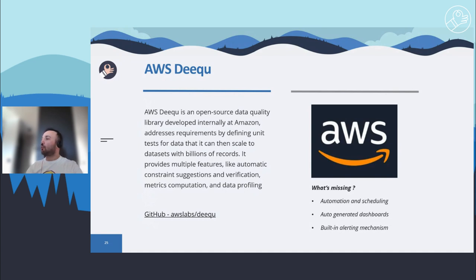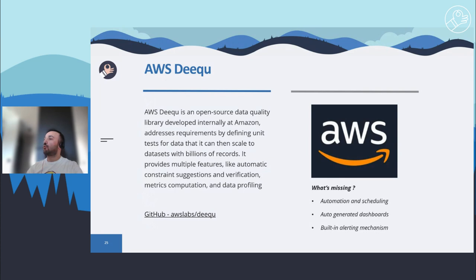Before discussing DQ's features, let me touch on what features are missing in AWS DQ. First, AWS DQ doesn't provide any scheduling mechanism because it is a library-based solution; however, as long as you can trigger a Spark process, you will be able to trigger the DQ validation process. Second, DQ provides validation metrics collection, but to monitor how your data changes over time, you have to generate your own dashboards — there are no ready-to-use dashboards. And lastly, DQ doesn't have any built-in alerting mechanism, so if you don't have a ready-to-use automated alerting mechanism, you will have to write some custom code.